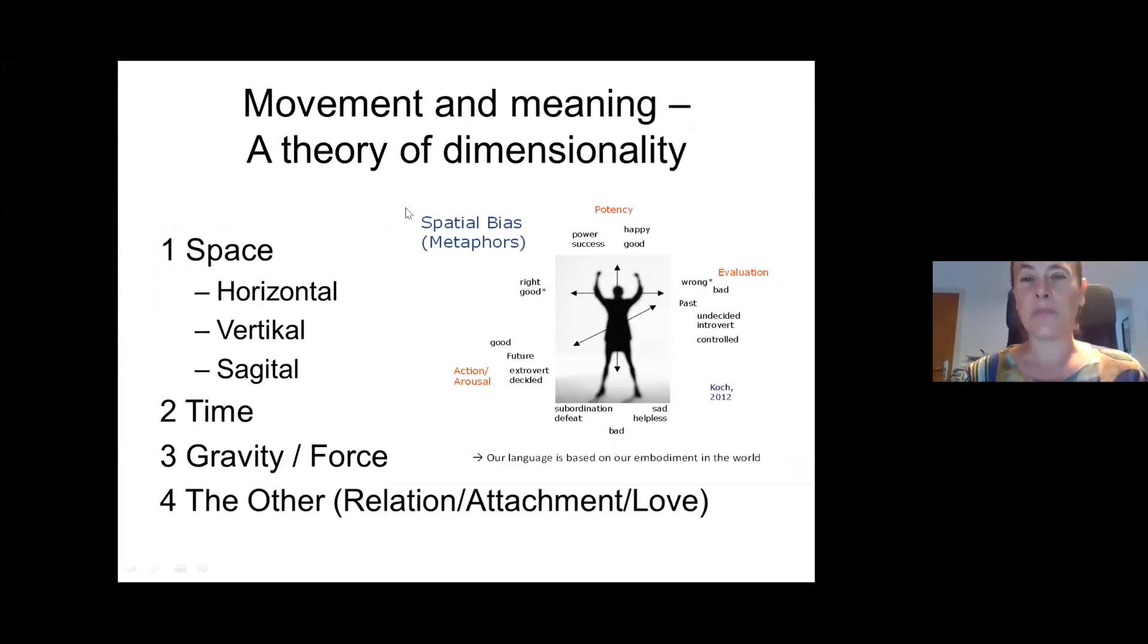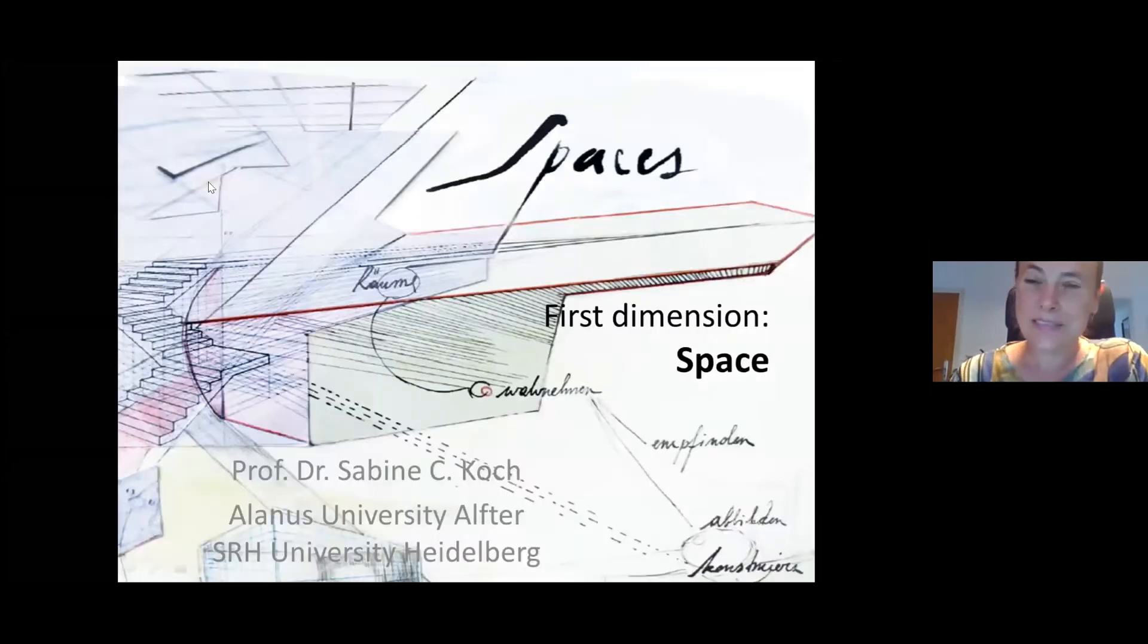So today I'm going to talk about the dimensions of space from that starting point of our coordinate system—our body—the dimension of time, the dimension of gravity, and the dimension of the other or the relational dimension. Let's start with space.